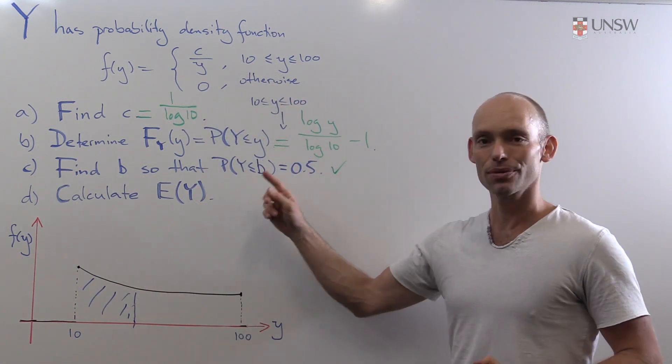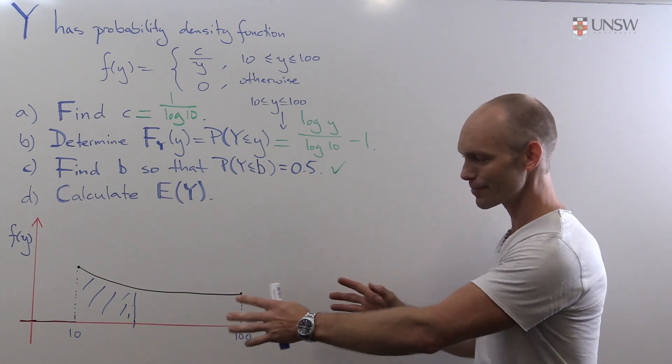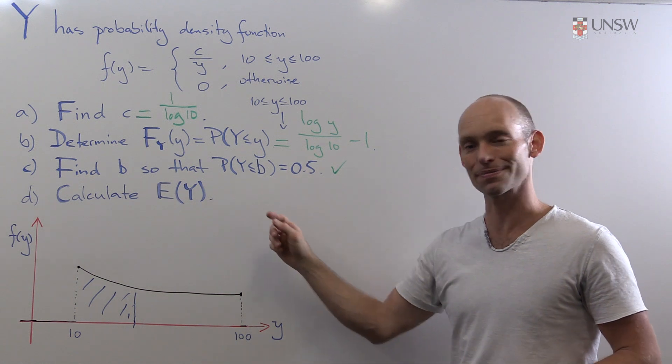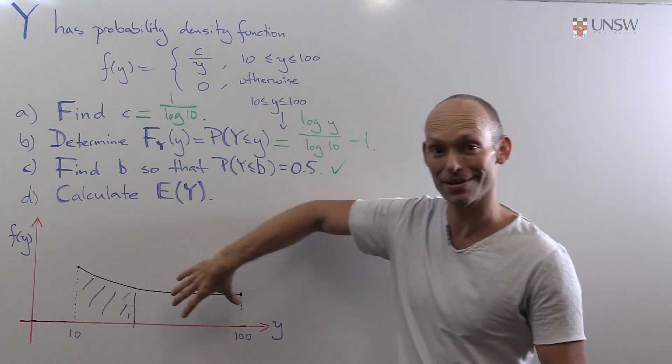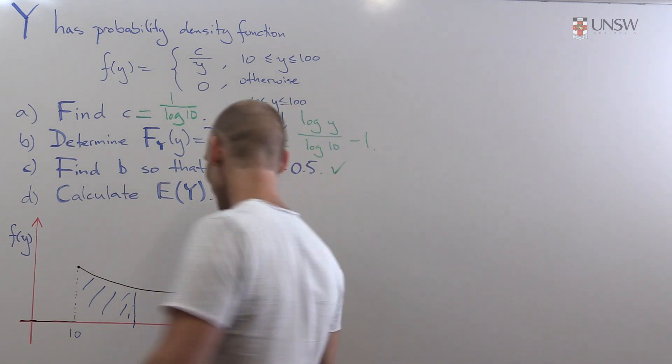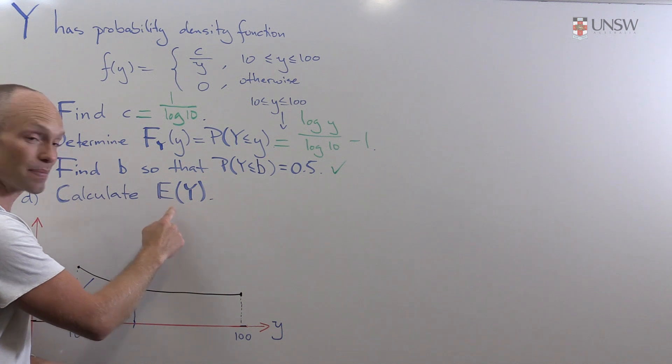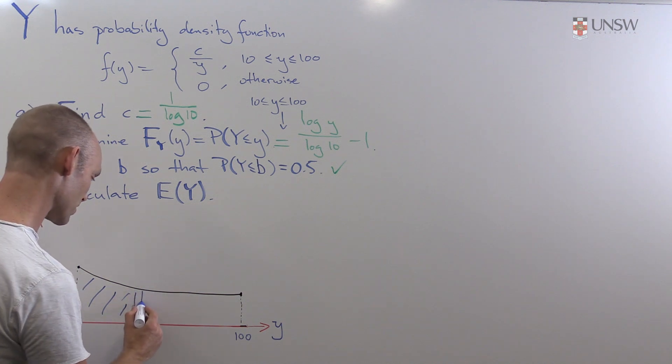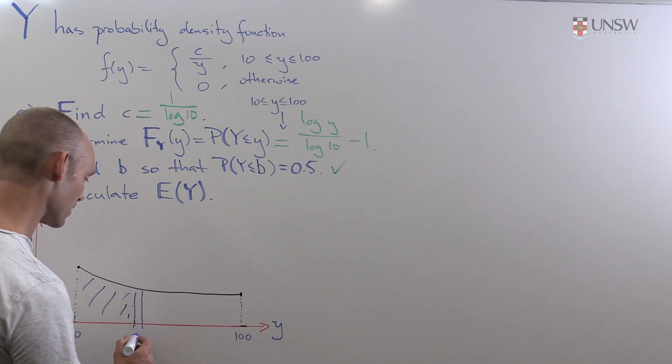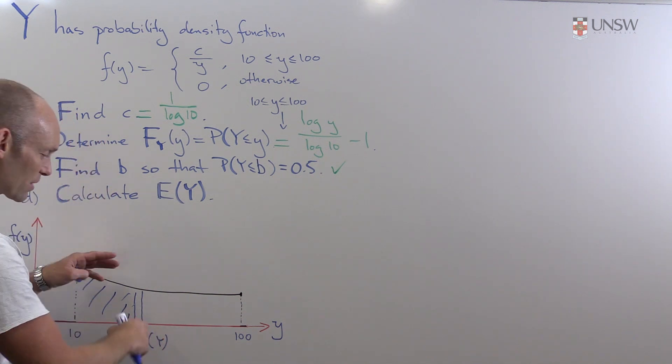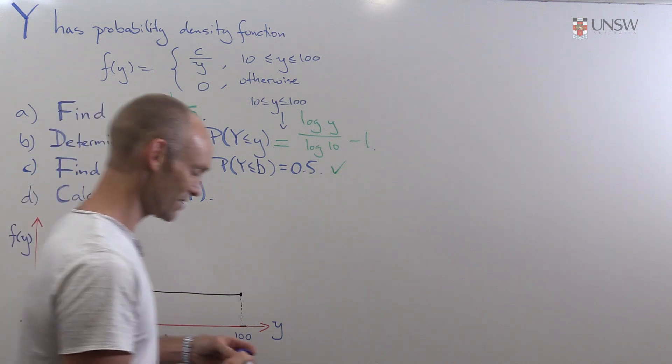In part D we're going to do something similar. We're going to find the centre of mass or something sort of similar to part C. But now it's a bit different. Instead of having two equal parts of the cake to eat, now we're going to try to balance the whole cake. So what we want to do is find the expected value of y. And that corresponds to trying to see where we can balance the cake here. And this is then the expected value of y, where the cake will nicely balance.